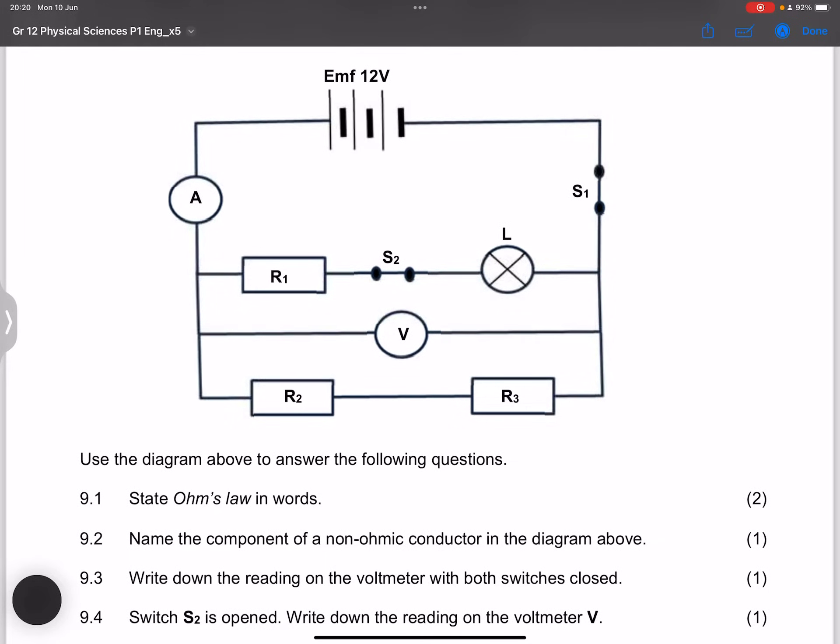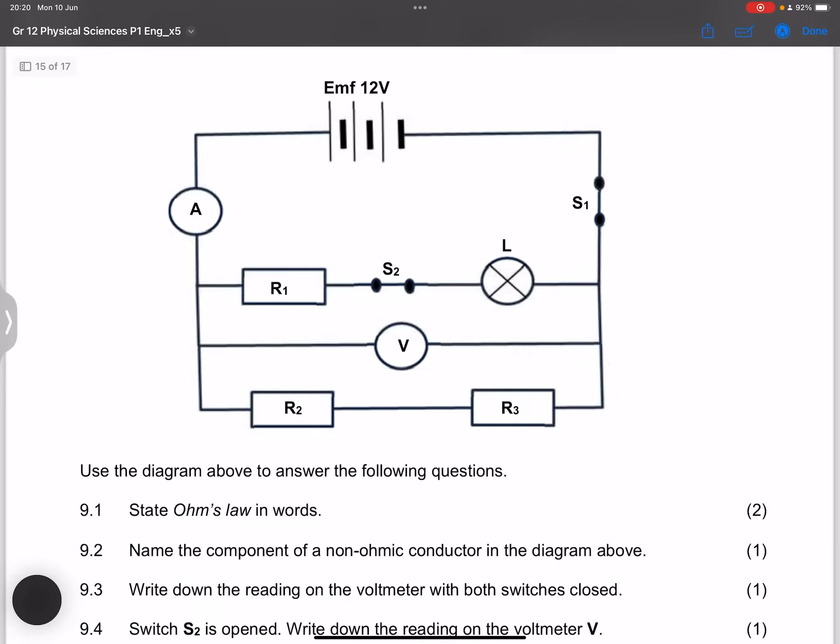Firstly, they say state Ohm's law in words. I hope that you know that law off by heart. It says the current across a conductor is directly proportional to the potential difference, provided temperature remains constant. Of course, I've seen other versions that say potential difference is directly proportional to the current, provided temperature remains constant.